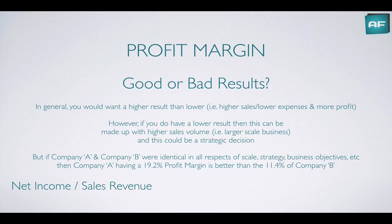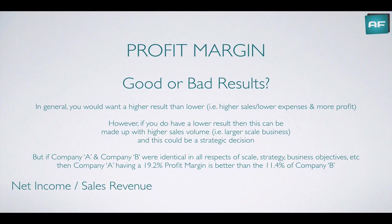And they can still generate a decent profit. But if Company A and Company B were identical in all respects — in regards to the business's scale, their specific strategy, the business objectives, the business type, and those sorts of things — then two identical companies: Company A having a 19.2% profit margin is better than, hypothetically, an 11.4% profit margin of Company B.